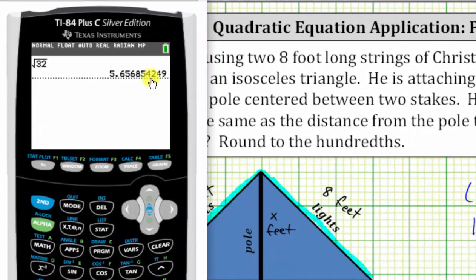Notice there's a six in the thousandths place value, which means you round up. x is approximately plus or minus 5.66.